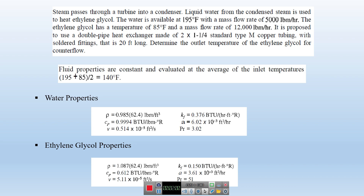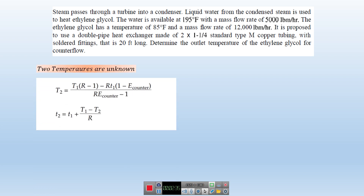Before solving the problem, let me give you a general picture. You are asked to find the outlet temperature. If you have one unknown exit temperature, you can simply use energy balance between the hot and cold fluid. Here, two temperatures are unknown. For two unknown temperatures, you can use correlations for counter flow or parallel flow. For counter flow, you can use the equations to find T2 and the exit temperature of the cold fluid, requiring R and E_counter.